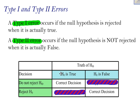But what if the null hypothesis is true, but you reject it? Well, you've made a mistake, and that kind of mistake is called a type 1 error.